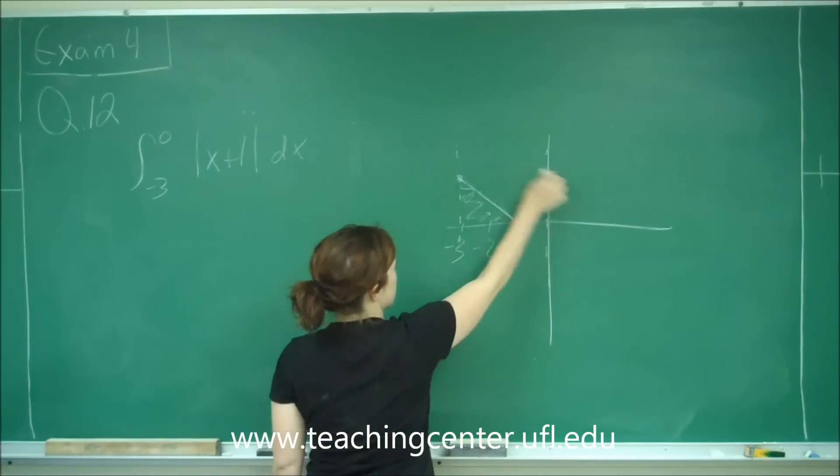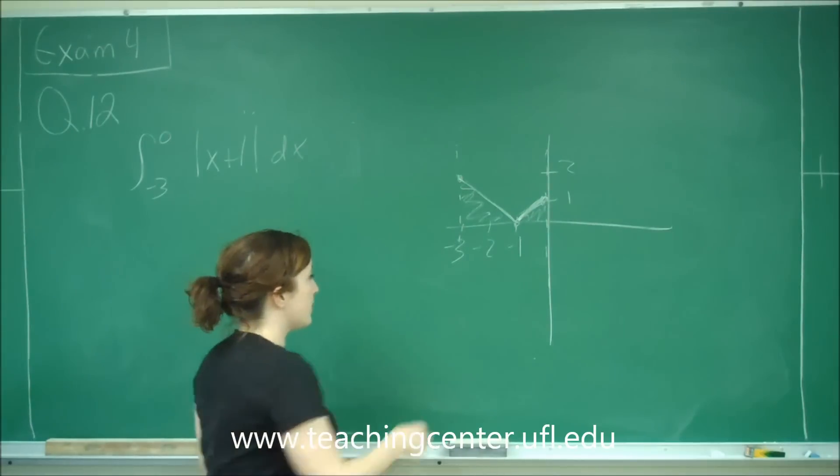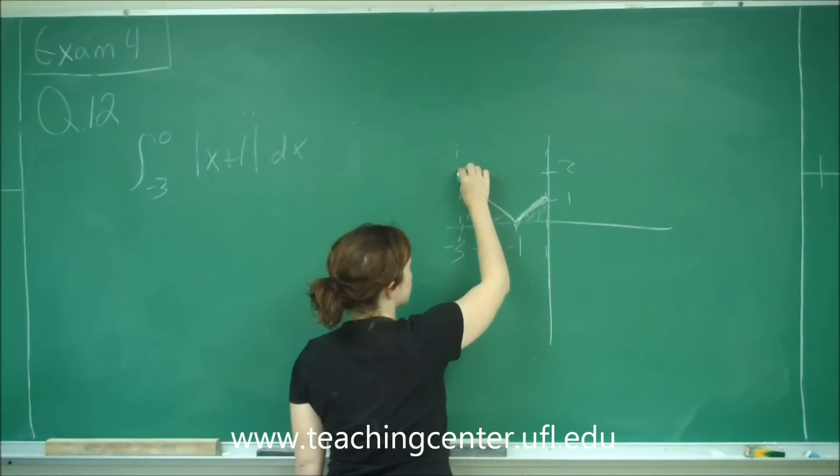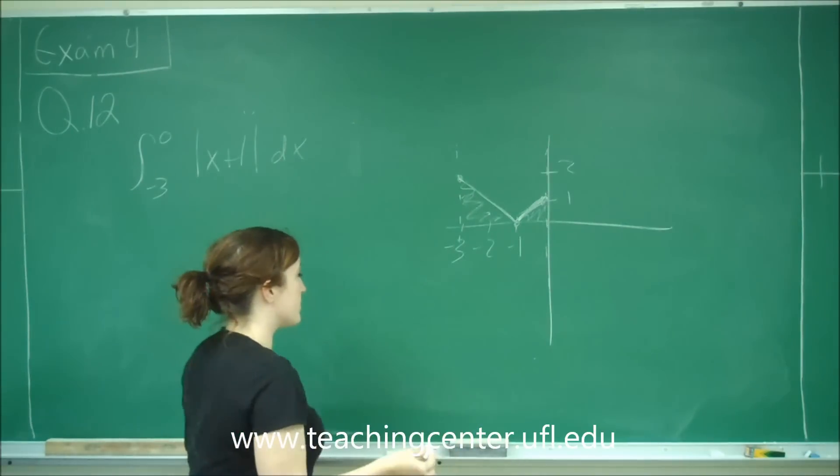And so, this is at 2, and this is at 1. So if I just did the area of the triangle, and I did it twice—once for this triangle here, and then this triangle here—then that would be the area under my curve.